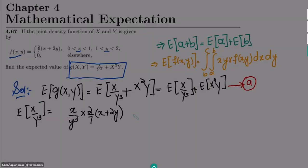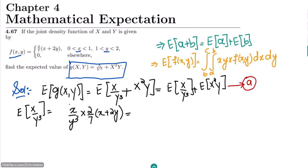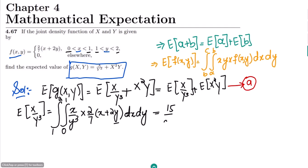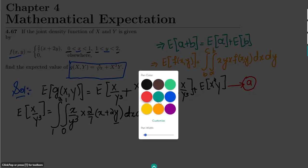For the integration, x ranges from 0 to 1 (dx), and y ranges from 1 to 2 (dy). After multiplying x/y³ by (2/7)(x + 2y) and applying the rules of integration over these limits, the result for E[x/y³] is 15/84.